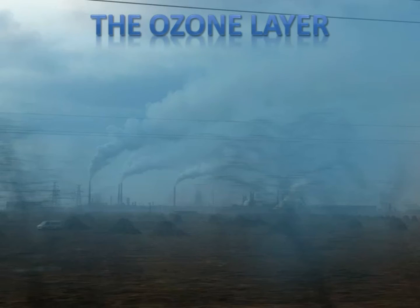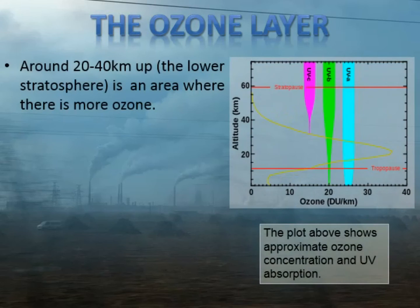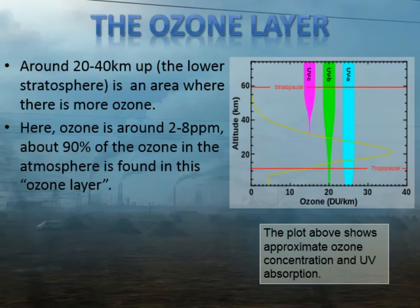So now we can see why the ozone layer is so important. It's around 20 to 40 kilometres up in the lower stratosphere, and it's just a region of higher ozone concentration. You can see a plot here of ozone concentration — that is the yellow line. In every million molecules of air in the ozone layer, about two to eight of them will be ozone. That's it — about 90% of the ozone in the atmosphere is found in this region. You can see how very small changes in concentrations of atmospheric gases can have relatively large effects on the Earth's systems overall.